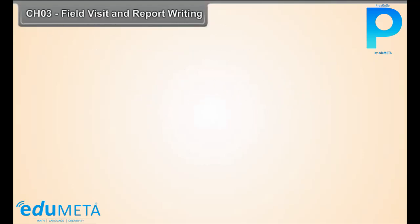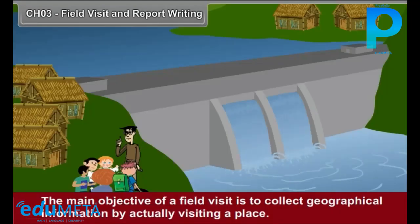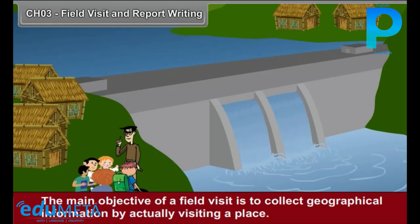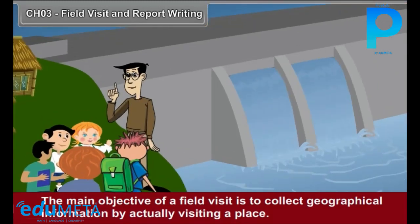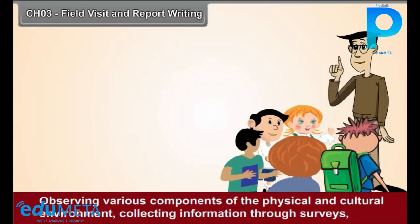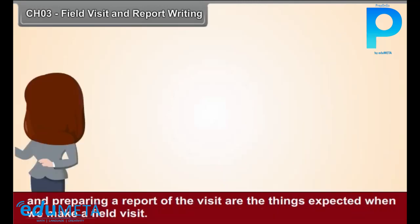Chapter 3: Field Visit and Report Writing. The main objective of a field visit is to collect geographical information by actually visiting a place. Observing various components of the physical and cultural environment, collecting information through surveys, and preparing a report of this visit are the things expected when we make a field visit. In this chapter, let us try to understand how to study these components when we visit a village.